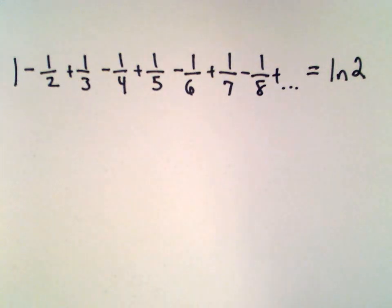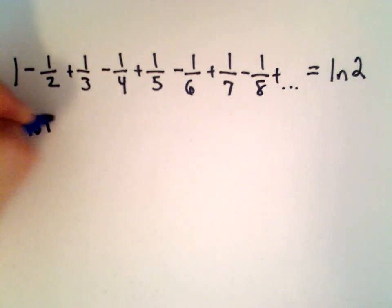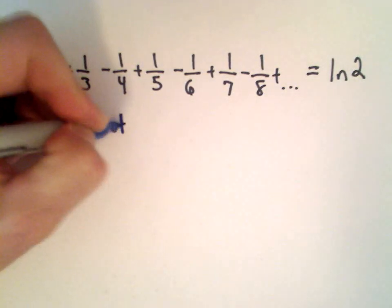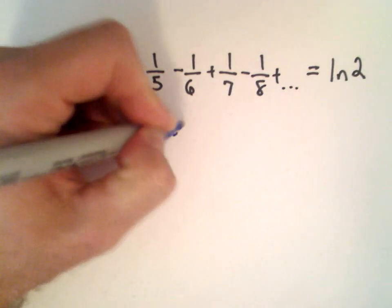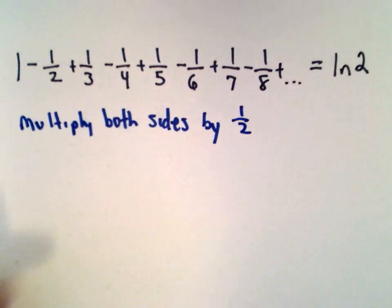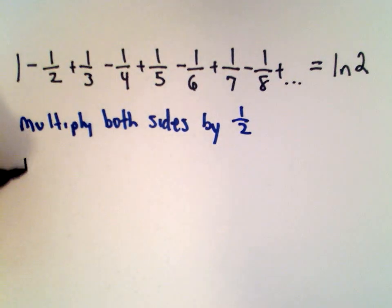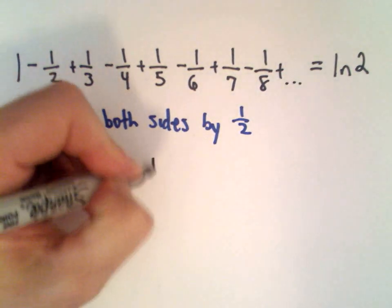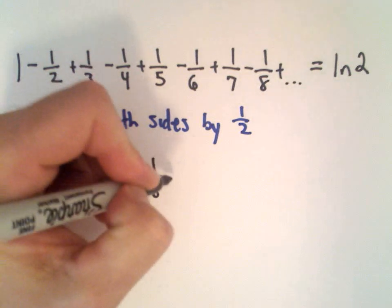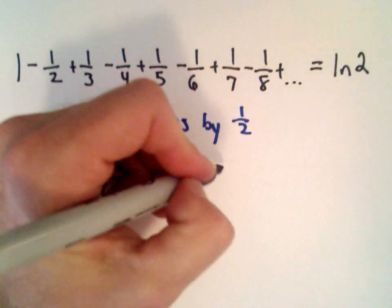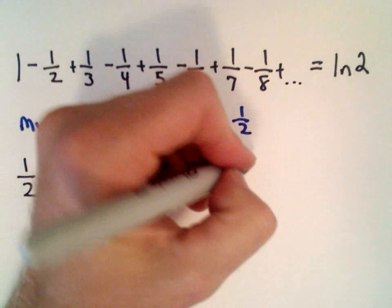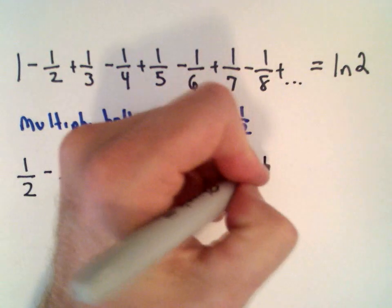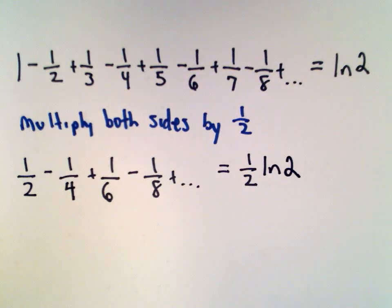What I'm going to do next is multiply both sides by one half. So one multiplied by a half gives us a half, then we'll have minus a fourth plus one sixth minus one eighth plus dot dot dot. And on the right side we'll be left with one half multiplied by the natural logarithm of two.